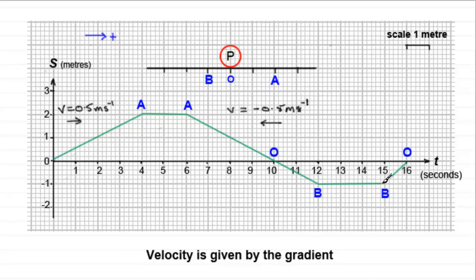And on this stretch, from B to O, you can see that the gradient is positive, and for one metre, it takes one second. One divided by one is one. So, we have a velocity here, V, equal to one metre per second, to the right.